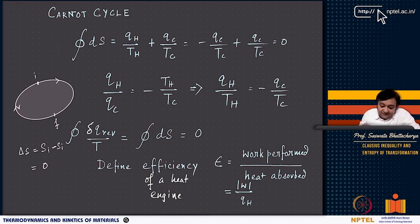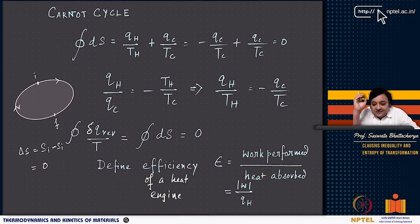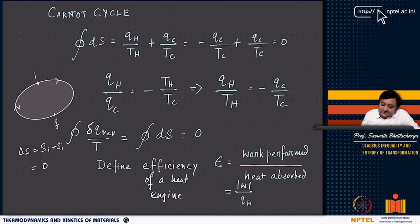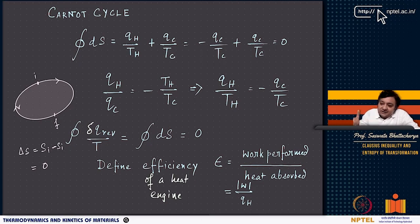The second law gives the definition of irreversibility and the directionality of a natural process. It tells you how the entropy of the universe will change — it will always move in a particular direction regardless of whatever process occurs.